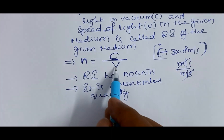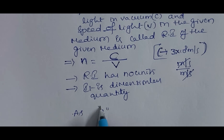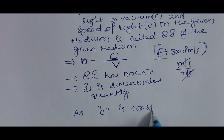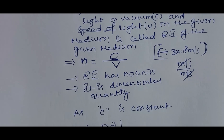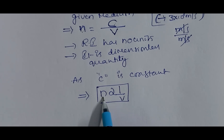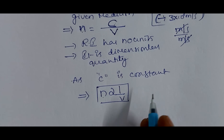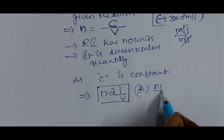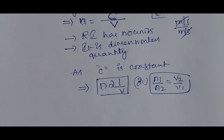Since C is constant, the relation between N and V is inversely proportional. This means that for a given medium, if the N value is higher, then the speed of light in that medium is lower. So the refractive index of a material medium is inversely proportional to the speed of light in that medium. In two media, this can be written as N1/N2 = V2/V1.